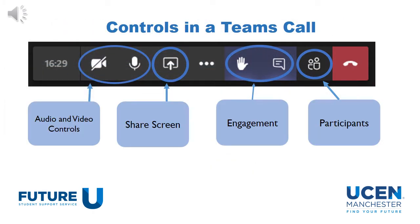Once you are in a call with your team, there are a few different functions that you can use. Firstly, you have your audio and visual controls — these will allow you to control whether you have audio on or whether you can show your camera. You are also able to share your screen. You can engage in the call by raising your hand or by posting in the chat, and you can also see who else is in the call with you.